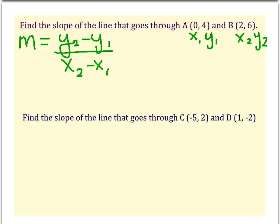So for y2 minus y1, we'll have 6 minus 4, and x2 minus x1 will have 2 minus 0. Well, 6 minus 4 equals 2, and 2 minus 0 equals 2, so this simplifies to a slope of 1.